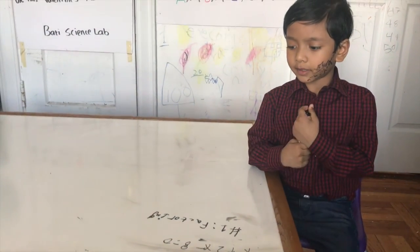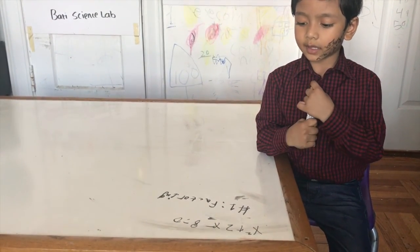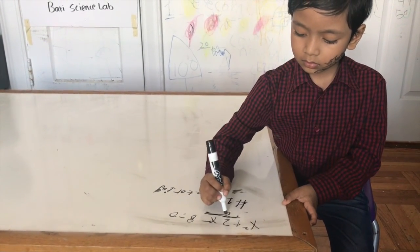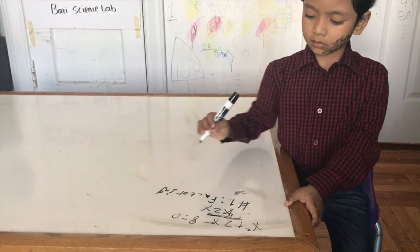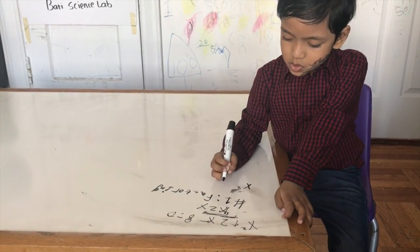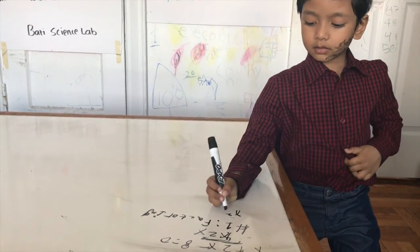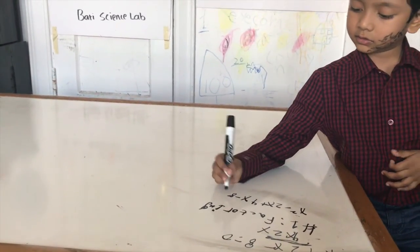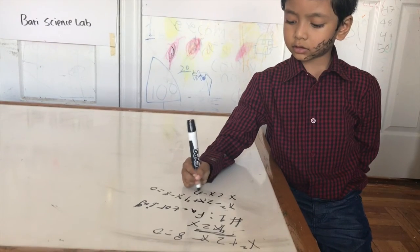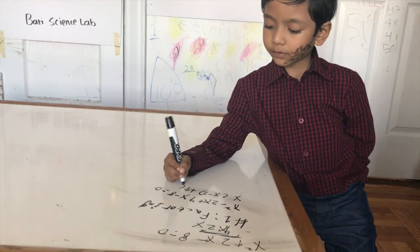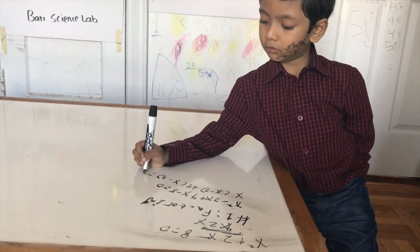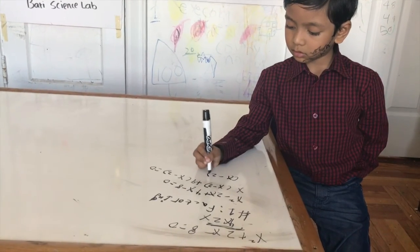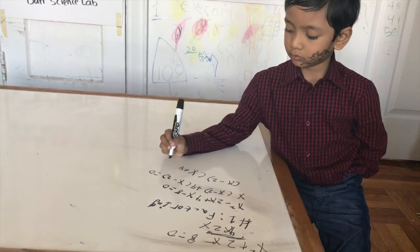I have to find two numbers whose product is 8 and whose sum is 2. X squared minus 2X plus 4X minus 8 equals zero. So X minus 2 times X plus 4 equals zero.